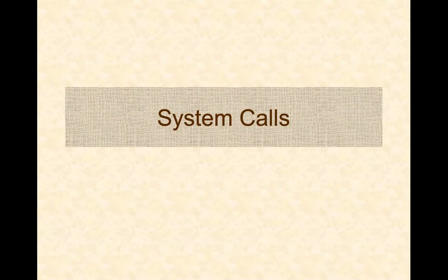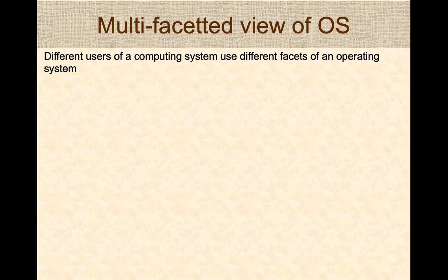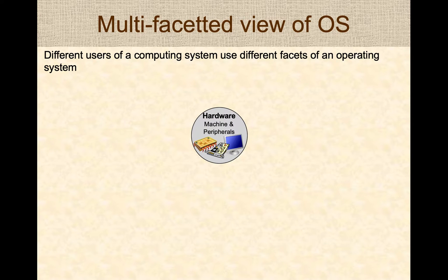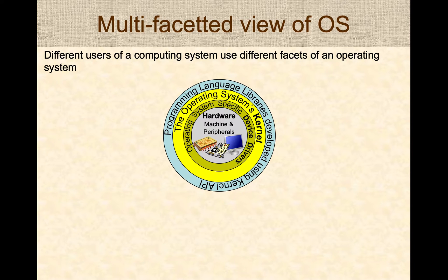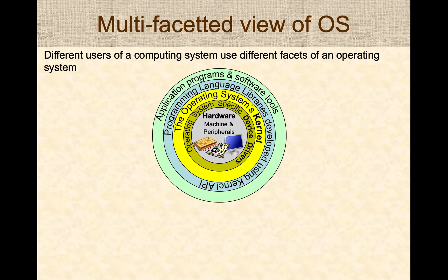This presentation covers some of the basic concepts underlying system calls that are widely used on modern operating systems. The core hardware peripherals and other resources on a computer are managed by the operating system's kernel. All interactions with the kernel are performed through programming language libraries, and application programs and software tools utilize these libraries to interact with the operating system. We are going to focus on these interactions in this presentation.